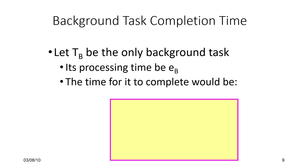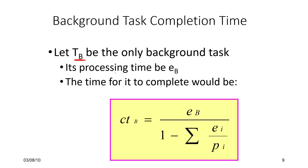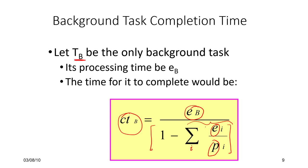Let us look at the background task completion time. Let T_B be the only background task with processing time E_B. The completion time of task B is basically the execution time of B divided by a denominator. This denominator involves E_i divided by P_i — the fraction of time the i-th task executes — summed over all foreground tasks i. This is the foreground fraction of execution, and one minus that is the background fraction, making it the denominator with E_B as the numerator.